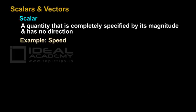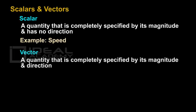On the other hand, a vector quantity is a quantity that is completely specified by its magnitude and direction. For example, velocity is a vector quantity. We have studied the difference between speed and velocity in previous lessons, so we are clear with that difference.